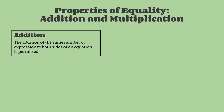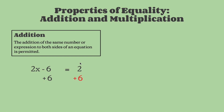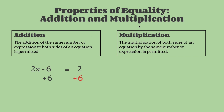Next, we'll go over the properties of equality in addition and multiplication. The addition property of equality states that the addition of the same number or expression to both sides of an equation is permitted. So here we have 2x minus 6 equals 2. We would add 6 on the left side to cancel out minus 6, and we also have to do the same on the right side to keep the equation balanced.